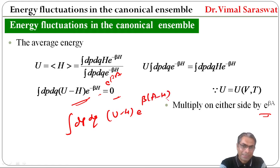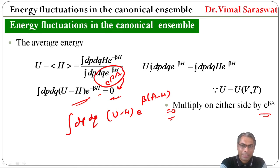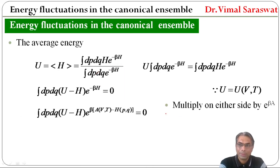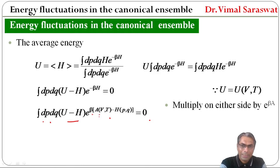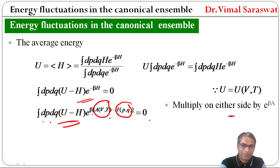Since the right-hand side is zero, if you multiply by exponential beta, it remains zero. So: integration dp dq (U minus H) e raised to beta(A minus H) equal to 0, where A is a function of V and T and H is a function of p and q. We have multiplied by e raised to beta A to obtain this equation.